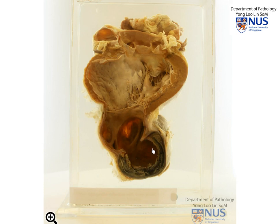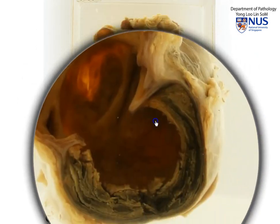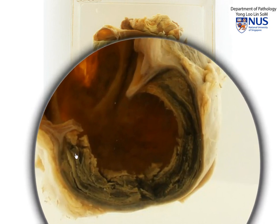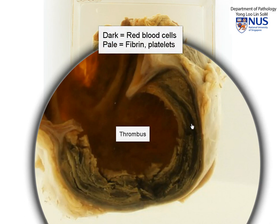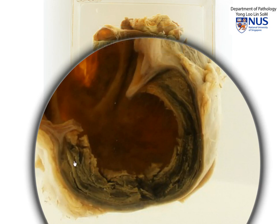Now let's focus on the pathology seen within the aneurysm itself. We're going to magnify this area, and we can see that there seems to be this layer of darkish material, a bit layered with paler areas. What we're looking at is actually a thrombus lining the wall of the aneurysm. The dark areas are composed of red blood cells and the pale areas are composed of fibrin, which is the ultimate product of the coagulation cascade or the clotting process. These layers are called the lines of Zahn, and they are characteristic in arterial thrombosis.